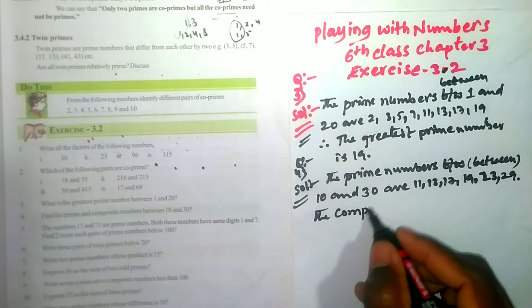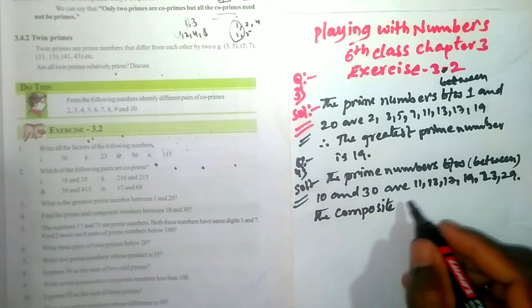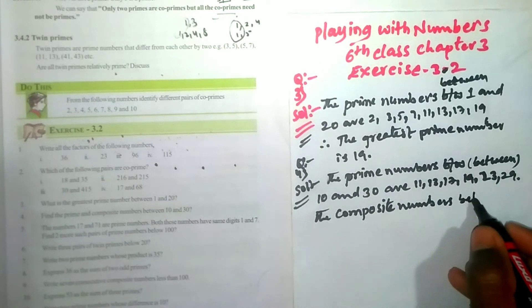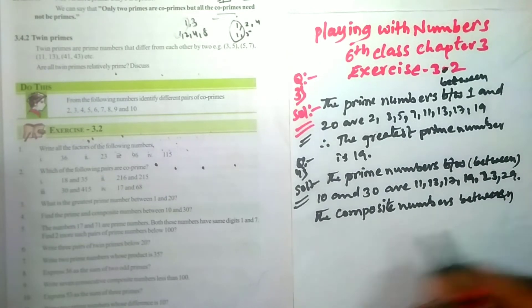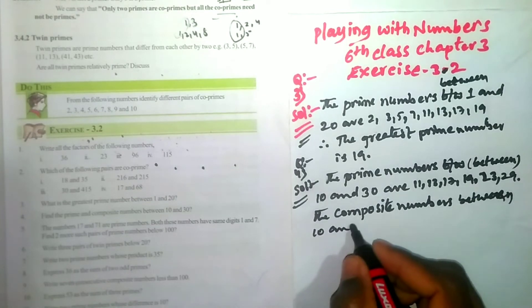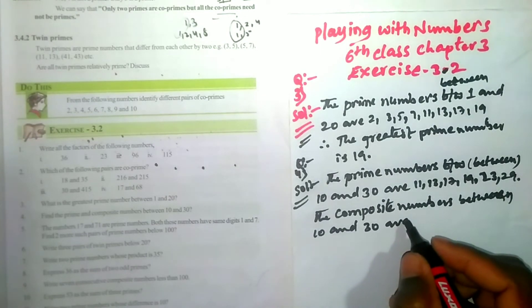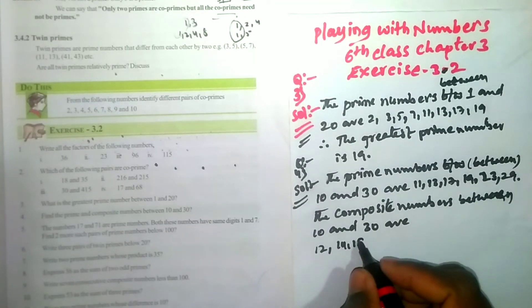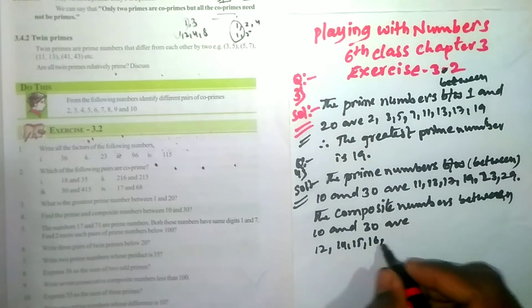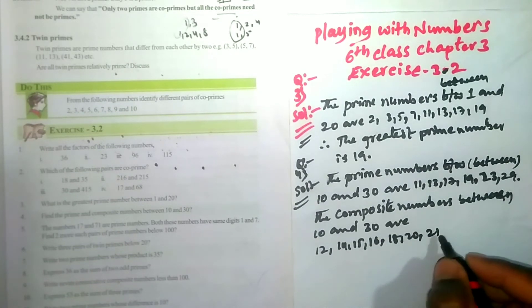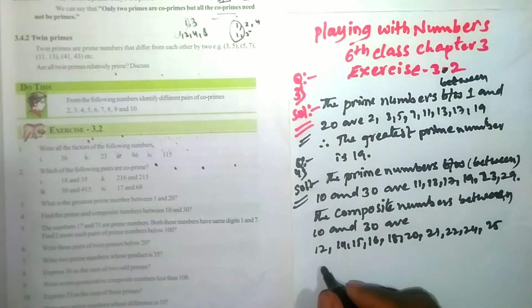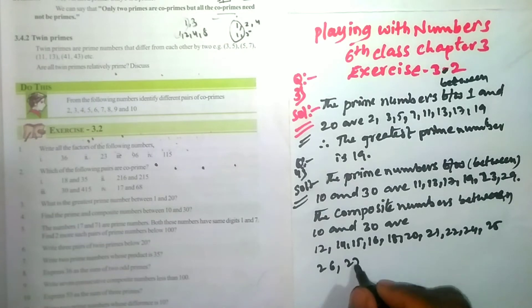The composite numbers between 2 and 20. These are the composite numbers: 12, 14, 15, 16, 18, 20, 21, 22, 24, 25, 26, 27, 28. So, these are the composite numbers.